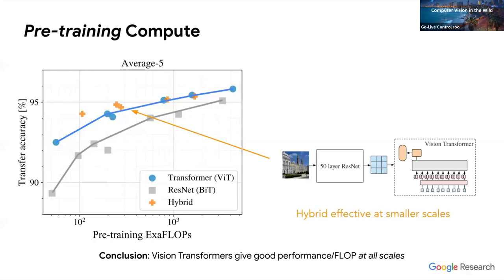Perhaps more exciting was that pre-training these transformers was actually surprisingly cheap. On the x-axis is pre-training compute rather than amount of data. At all amounts of pre-training compute, transformers could outperform equivalent-cost CNNs — not just the big networks trained for a long time, but also small networks trained for a shorter time. Hybrid approaches are very performant at smaller scales but tend to saturate faster than pure Vision Transformer designs at larger scale.